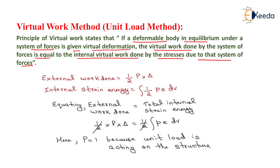From the previous lectures, we know that the external work done equals half P into delta, where P is the force acting on the structure and delta is the deflection of a particular joint.